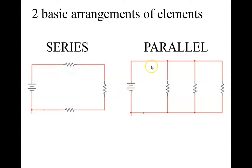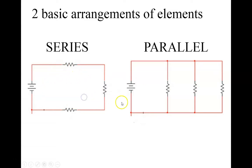Whereas in parallel, we have branching off, so the current can go down any one of these branches. In a series circuit, the current has to go through just the one loop - it's only got one path to follow, so the current is the same everywhere. Whereas in a parallel circuit, the current is going to change - it'll be different down different branches if there are different resistors.